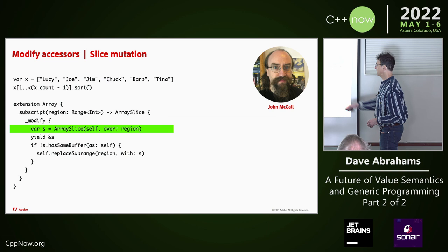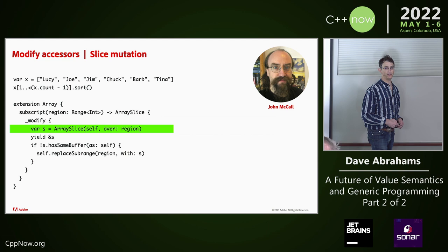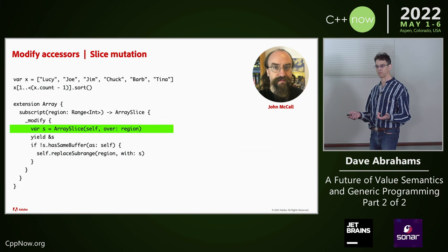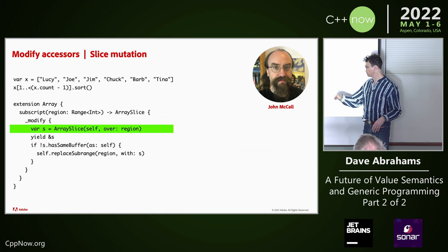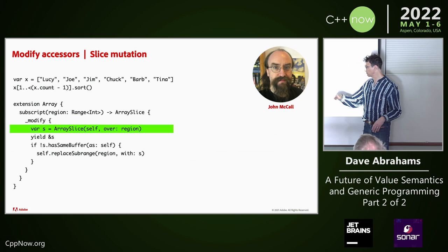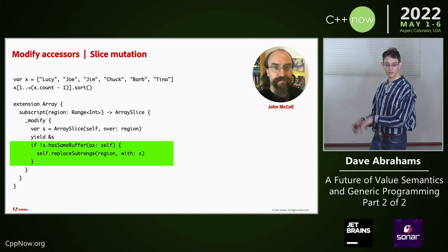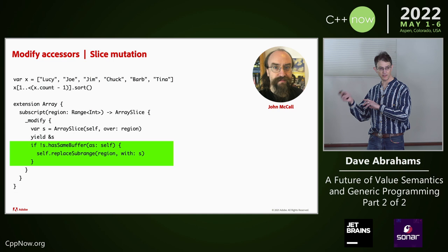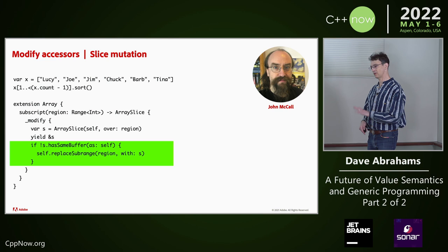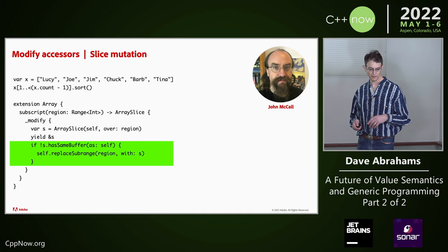Inside the modify accessor, we create an array slice — that's a different type than array. It doesn't exist anywhere in memory at the time the slice starts. This is not like something you do with a subscript that returns a reference in C++. You just produce a new object and then it gets yielded. After the yield, we get a chance for the implicit destruction of this slice to execute — in this case, the slice can be resized, and if it does, it doesn't have the same buffer as the original and we have to actually move elements back. So you get an opportunity to actually update the source.